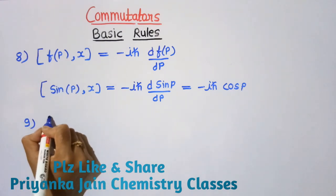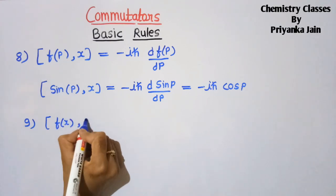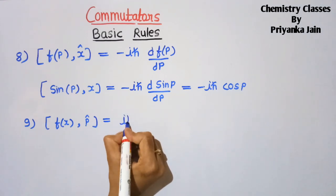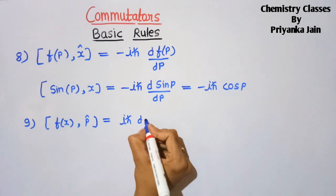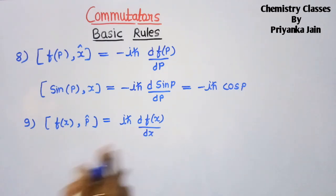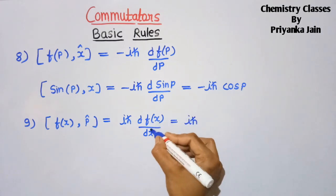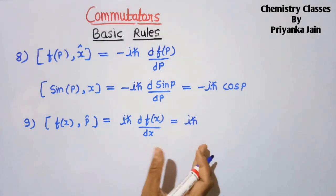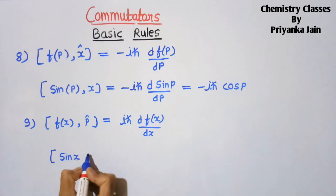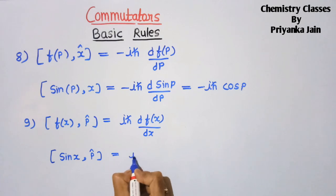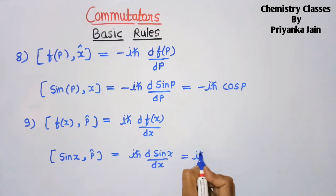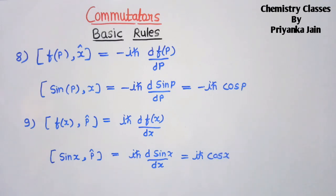Similarly for a function of x: [f(x), p] = [x, p] × df/dx = iℏ × df/dx. Example: [sin(x), p] = iℏ × d(sin x)/dx = iℏ cos(x).